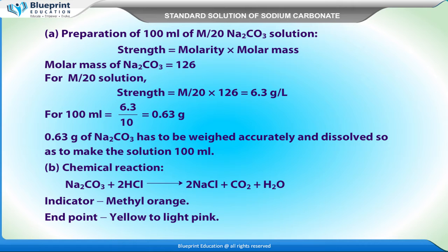Strength is equal to molarity into molar mass. Molar mass of Na2CO3 is equal to 126. For M by 20 solution, strength is equal to M/20 into 126 is equal to 6.3 gram per litre. For 100 ml, that equals 6.3 by 10 equals 0.63 gram. 0.63 gram of Na2CO3 has to be weighed accurately and dissolved so as to make the solution 100 ml.